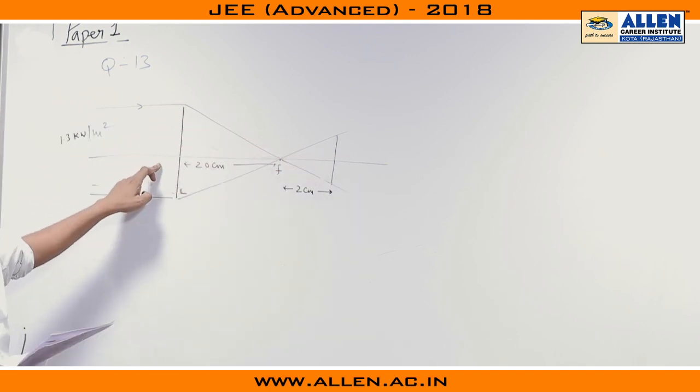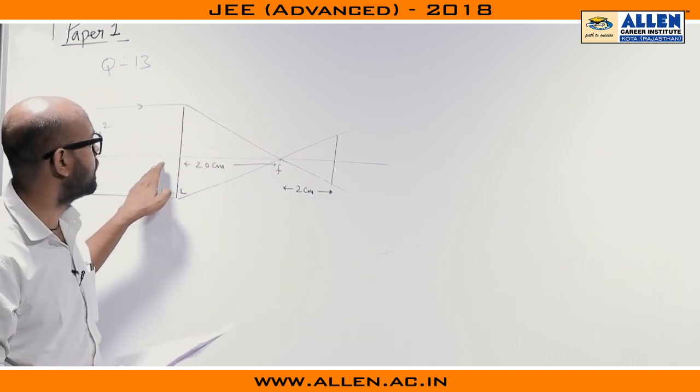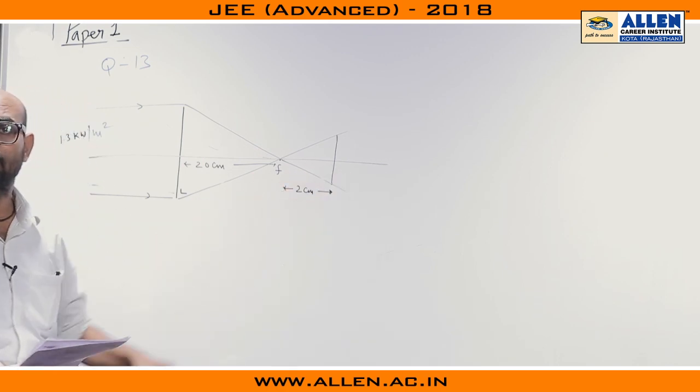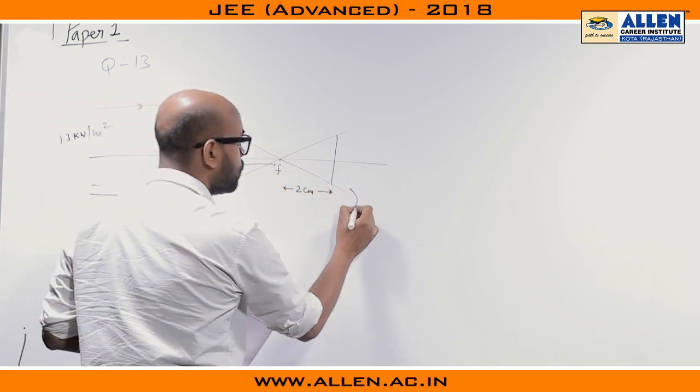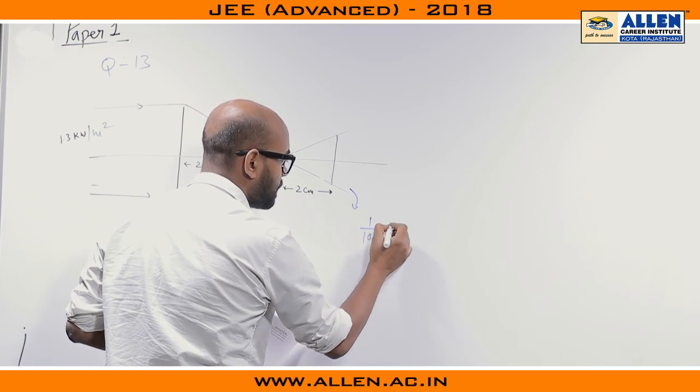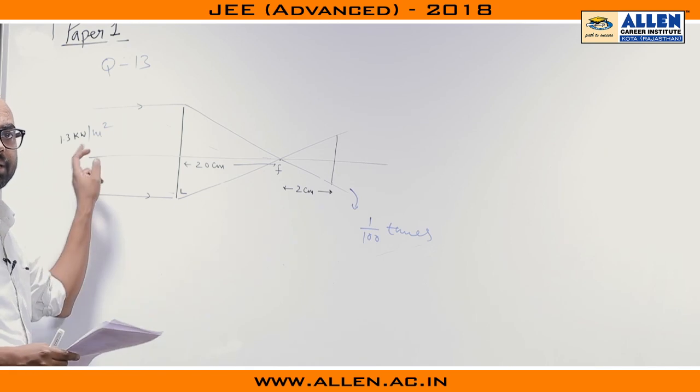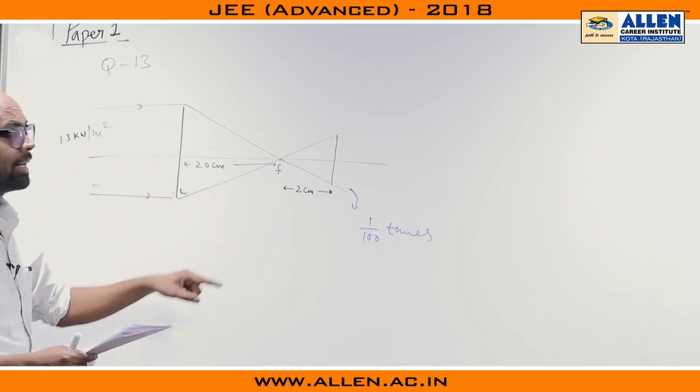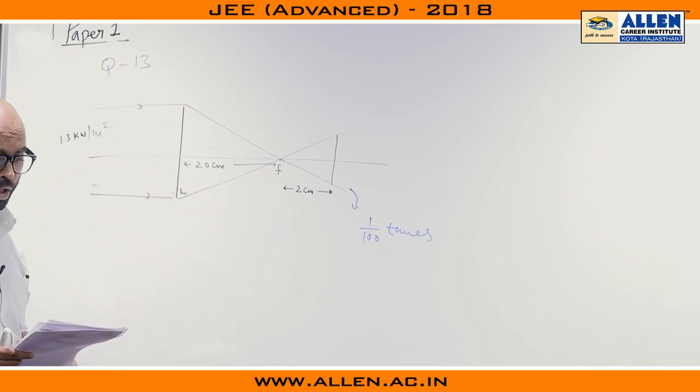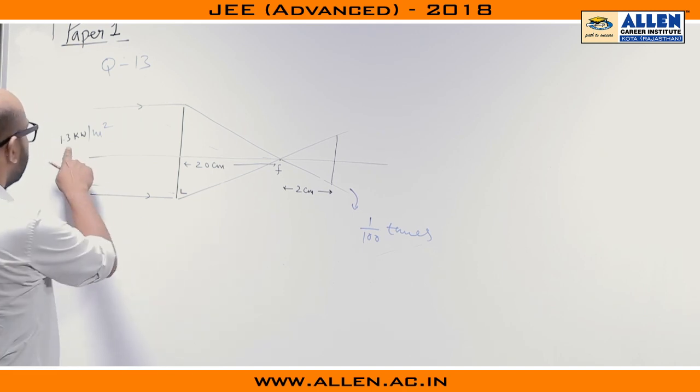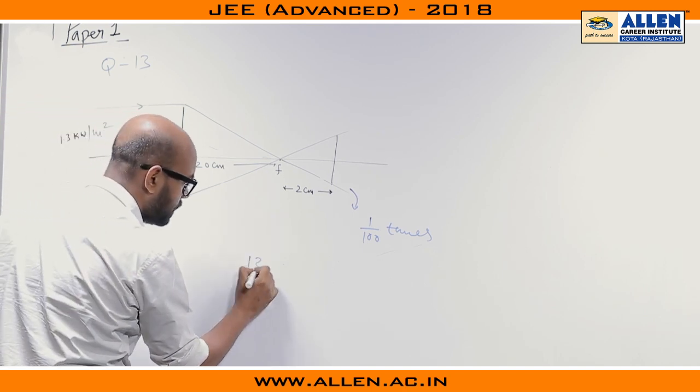So the ratio of area will be 1 is to 100 is to 1. So here what we are observing, the area has reduced to 1 by 100 times. But the energy is same. If energy is same, area is reduced to 1 by 100 times, the intensity will become 100 times. So the new intensity will be 100 times of 1.3 that means 130.